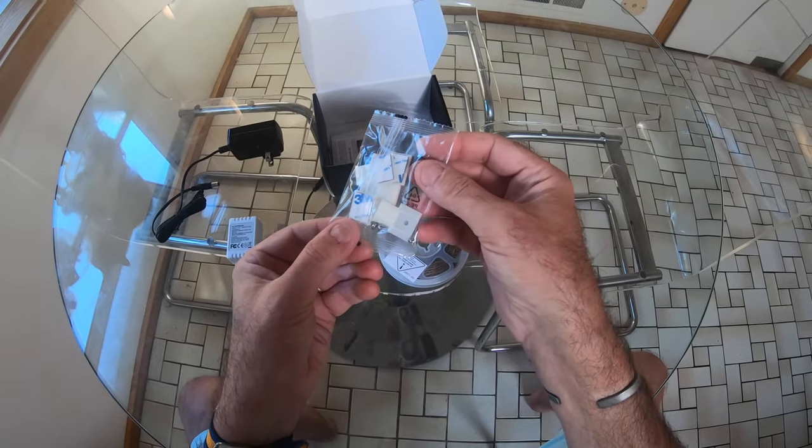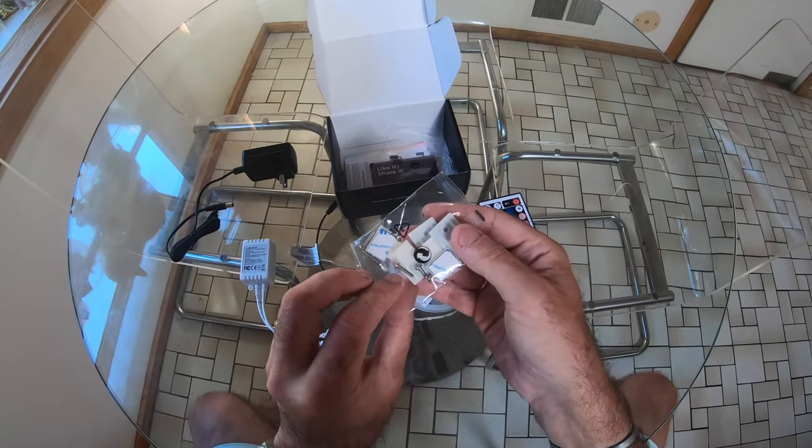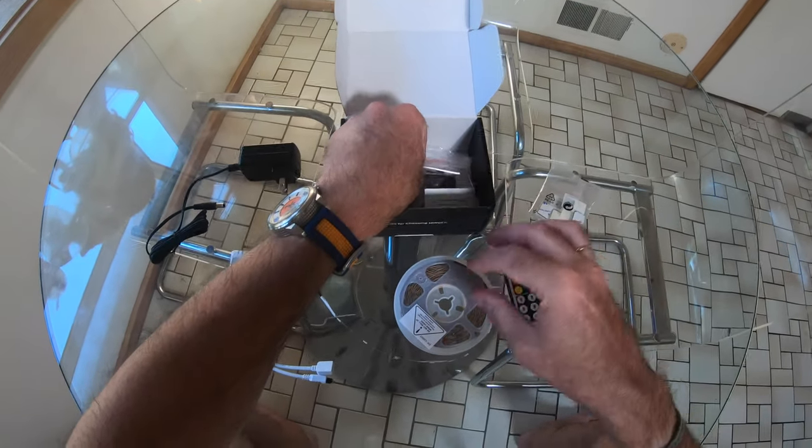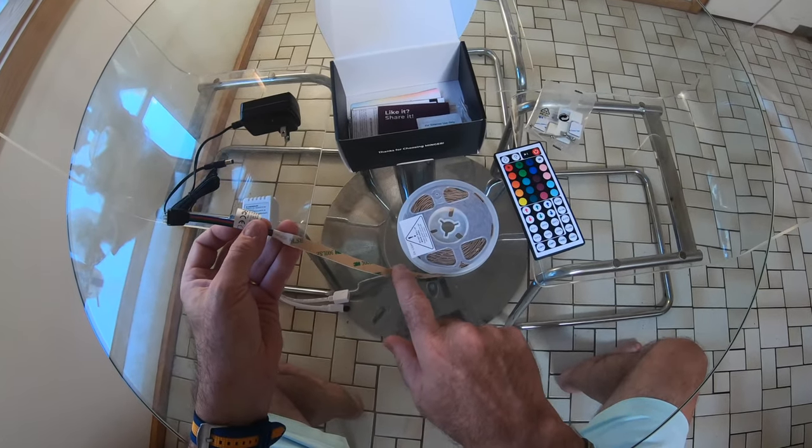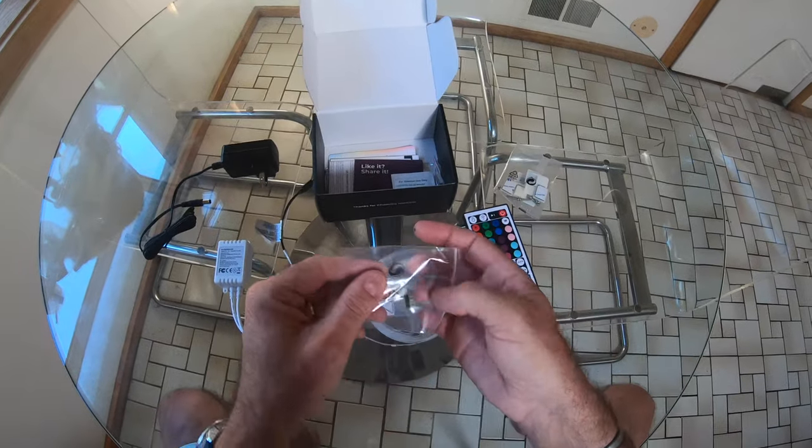I'll measure out that length of lead in just a second. Now we've got some little clips and screws in here. I'm going to need to read the instruction manual to find out what they're for because the LED lights already appear to have 3M double-sided tape on the back of them.